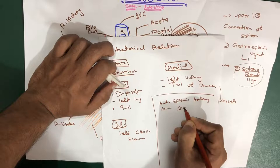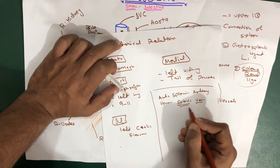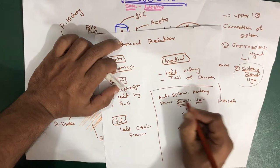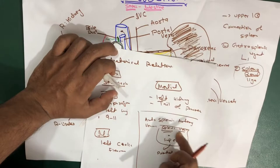Remember, the splenic vein together with the superior mesenteric vein joins together to form the portal vein. Normally, the spleen is drained into the splenic vein, which drains back into the portal vein, or you can say the hepatic portal vein.